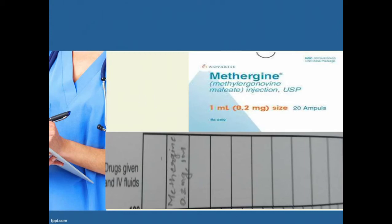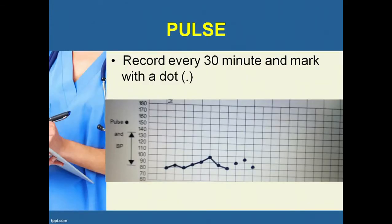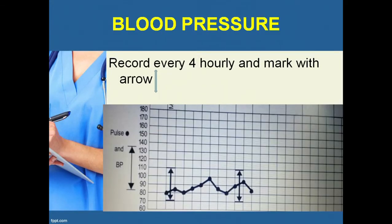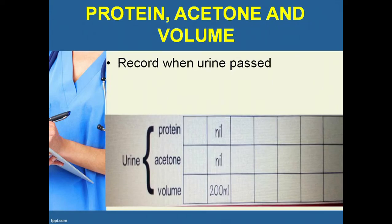Maternal conditions include vital signs: blood pressure, pulse, and temperature; urine analysis for albumin, glucose, and urine volume. Record pulse every 30 minutes marked with a dot line. BP is recorded every four hours marked with an arrow. Temperature is recorded every two hours. Protein and urine are recorded whenever the patient passes urine.